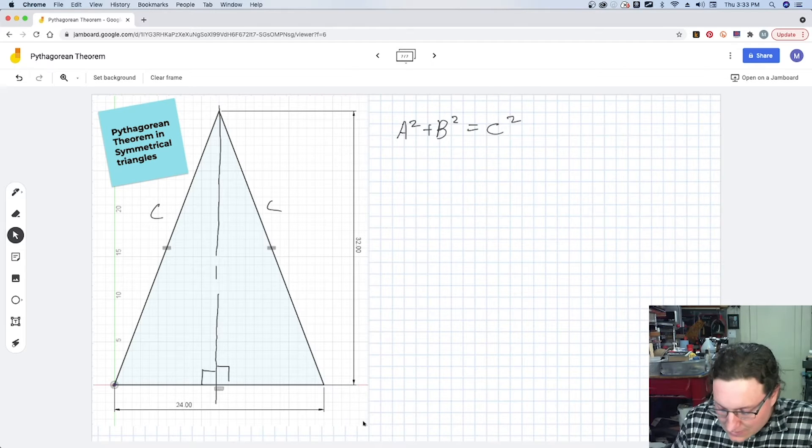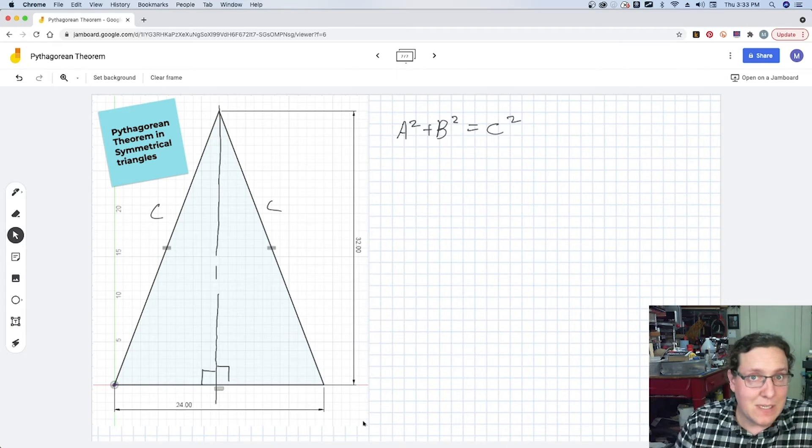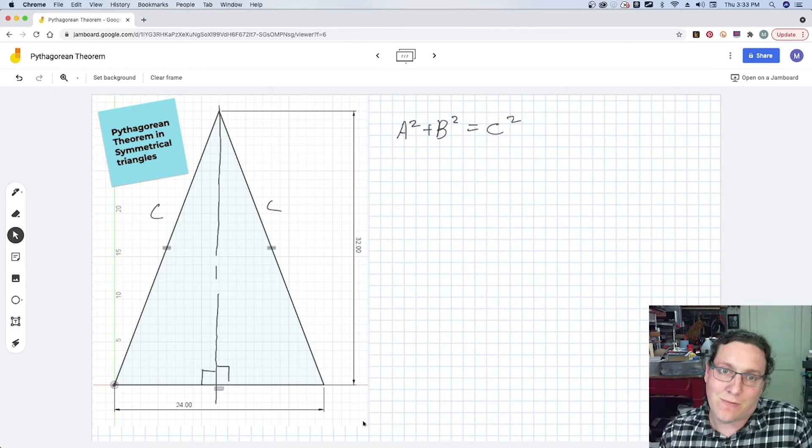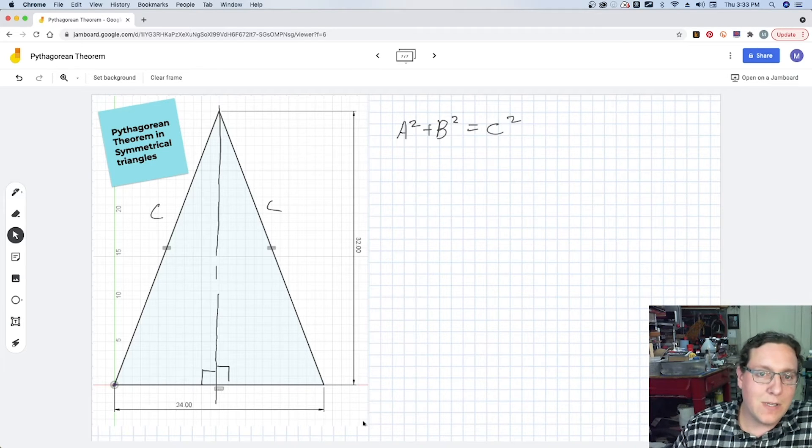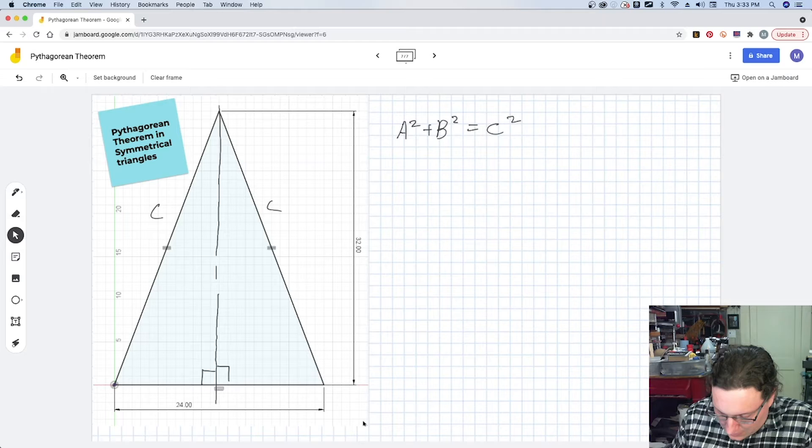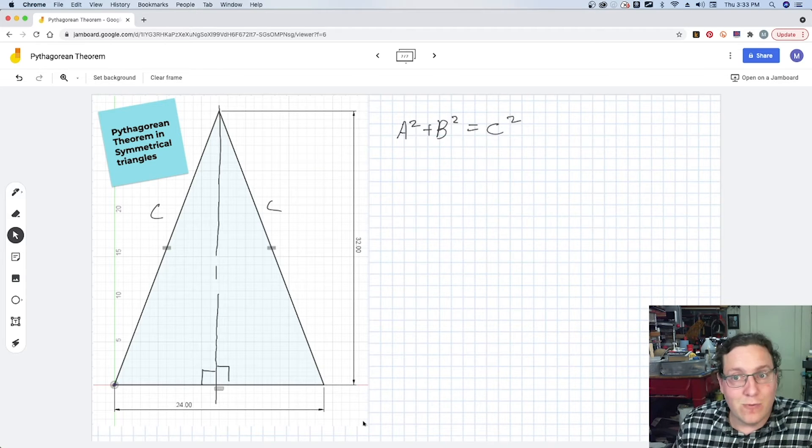Because C is going to be equal to C, the left hypotenuse is going to be equal to the right hypotenuse, we can also say that the base is going to divide into two.